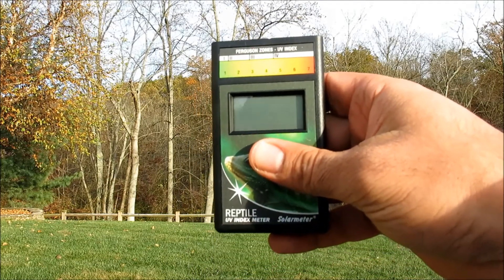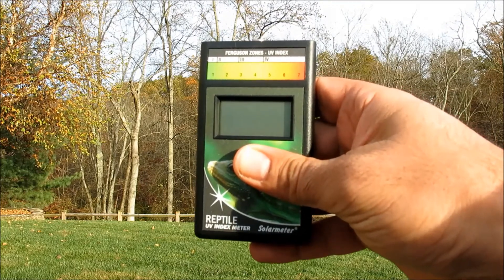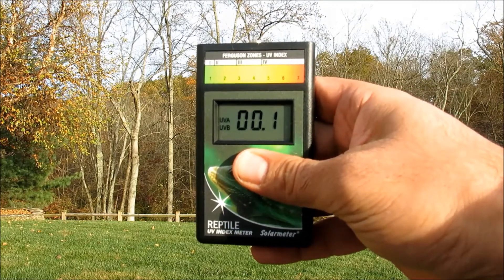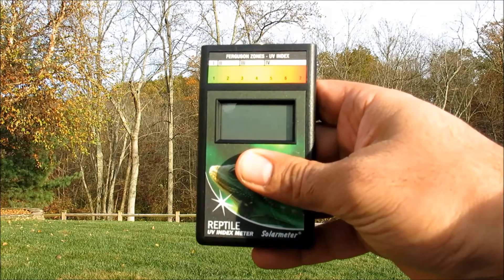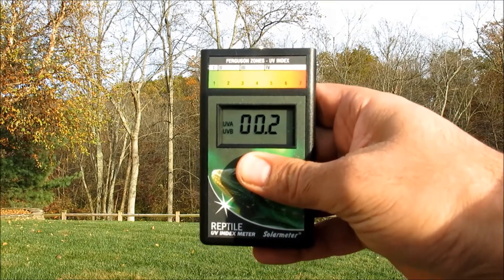Using the solar meter unit is easy. First, unpack it and remove it from its included carrying case. Then simply press and hold the push-button switch on the front face of the unit, aim the sensor window on the top panel of the meter directly at the UV source, and note the reading on the 3.5-digit LCD display.